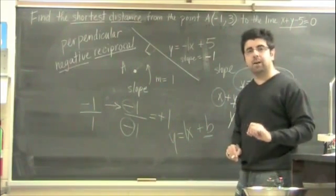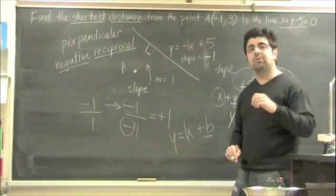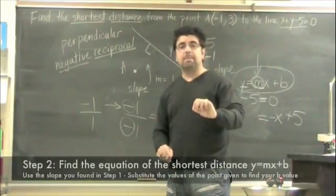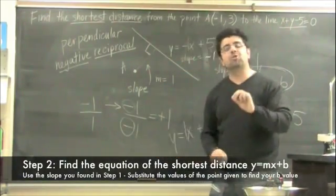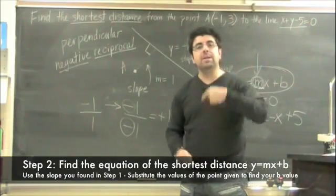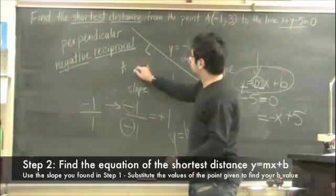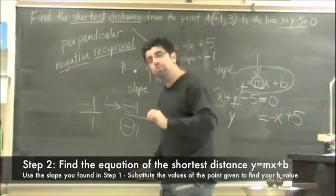That's what we need to find for our new equation, because what we're trying to do is step number two: we are trying to find the new equation of the shortest distance. In order to do that, we need to look at the information that we're given.